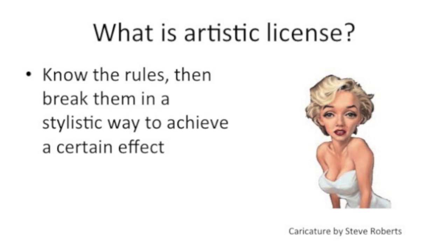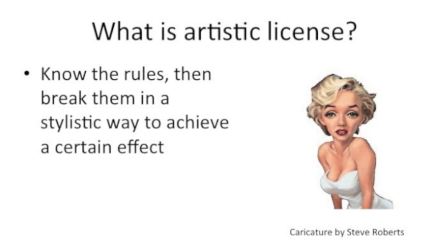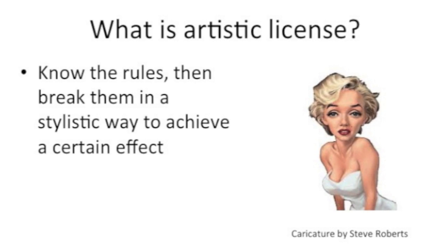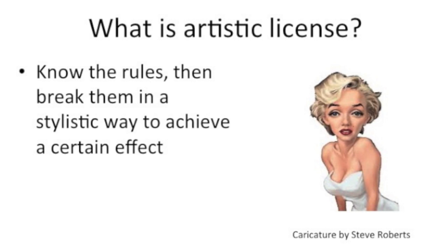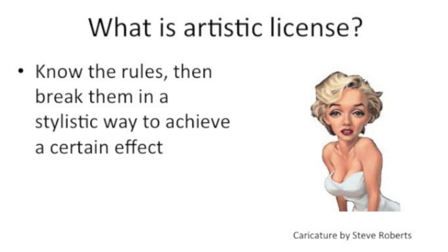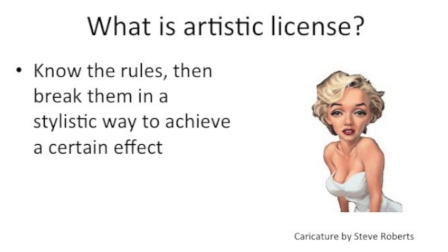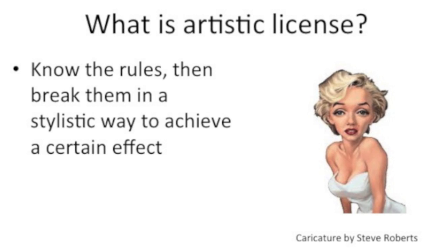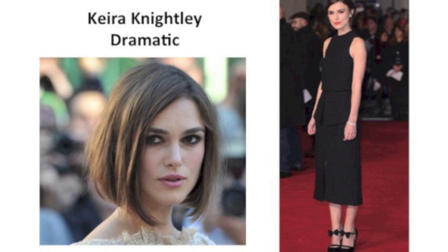This is not to be confused with my color system, which is also called artistic license. I'm using the term here to describe when you know the rules of something, you can break them in a stylistic way to achieve a certain effect. You can see this caricature by Steve Roberts — we can still tell it's Marilyn Monroe, but he used a lot of artistic license and his own style to express that.